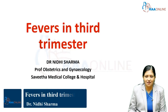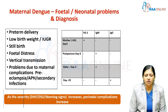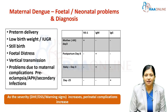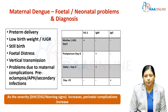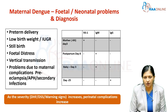Welcome to RAA online. Today's topic is fever in third trimester in pregnancy. A mother can have maternal dengue in the third trimester, which is associated with preterm delivery, low birth weight, fetal growth restriction, stillbirths, fetal distress, and vertical transmission to newborn. Problems can also occur due to preeclampsia, antepartum hemorrhage or placental abruption, and secondary infections associated with dengue.